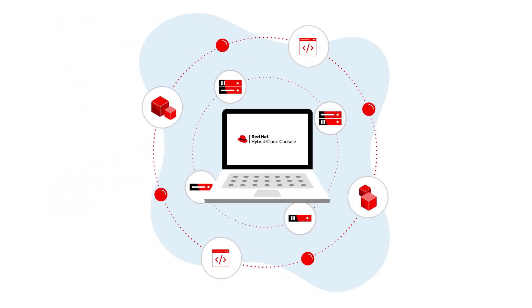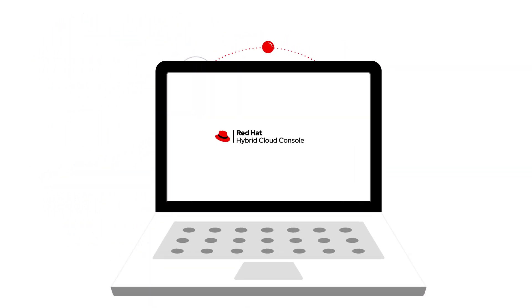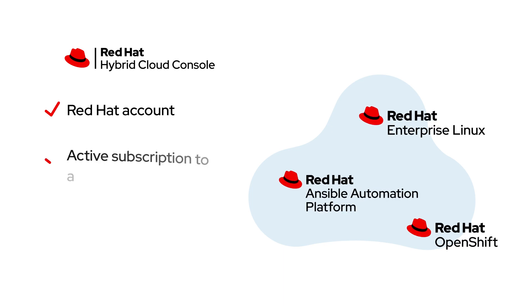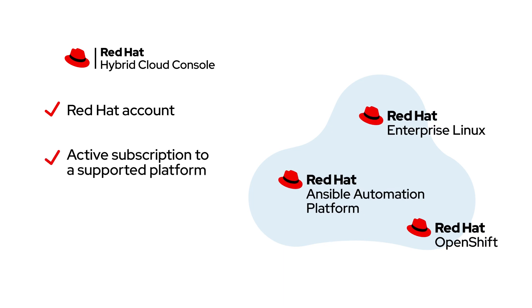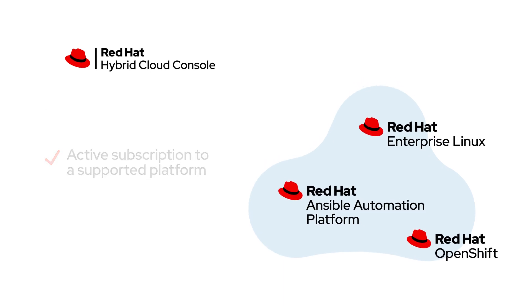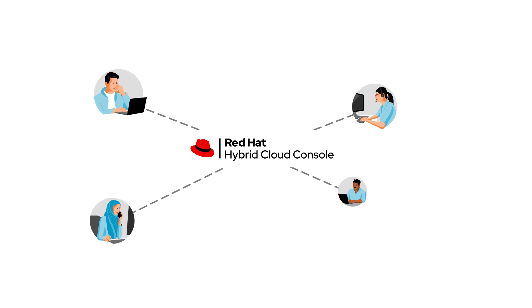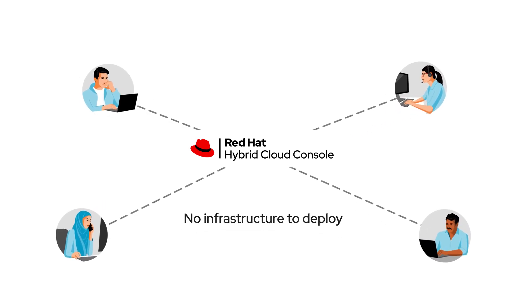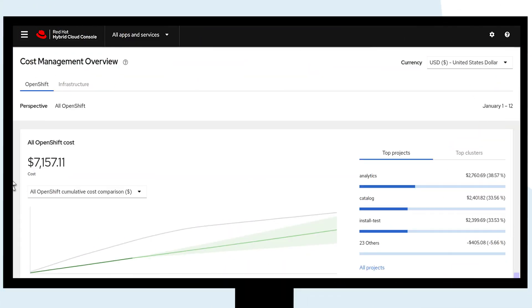To access the console, all you need is a Red Hat account and an active subscription to a supported platform. It's a free, value-added service included in your subscription. There's no infrastructure that needs to be deployed — just start using it to get an aggregated view of costs across your hybrid cloud environment.